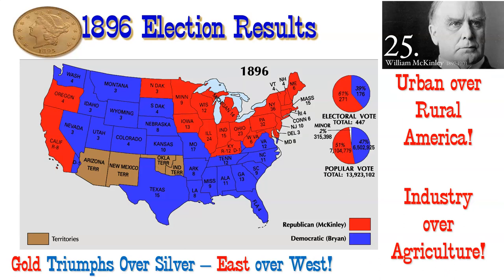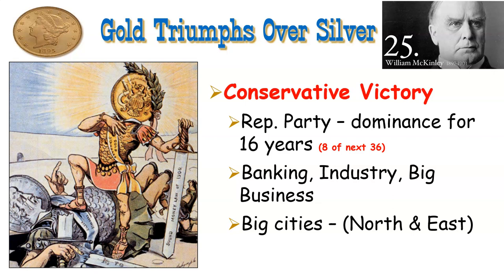Make sure you understand the 1896 results. It's a fairly close election — Democratic blue throughout the South and the West, Republicans in the North. It is a victory for urban America versus rural America, industry over agriculture, gold over silver, East versus West. That theme has been a long-running one in American history. It's a conservative victory, and the Republican Party is going to dominate for the next sixteen years — centered on banking, industry, and big cities in the Northeast.